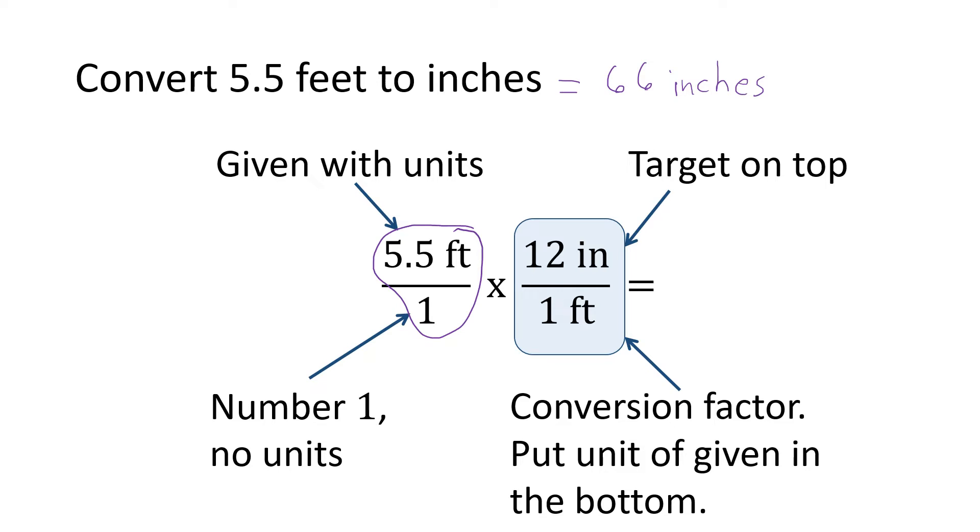Now, if you take a calculator and you take 5.5 times 12, you end up with 66. So hopefully you believe me that this technique works because it matches what we came up with before we started dimensional analysis.